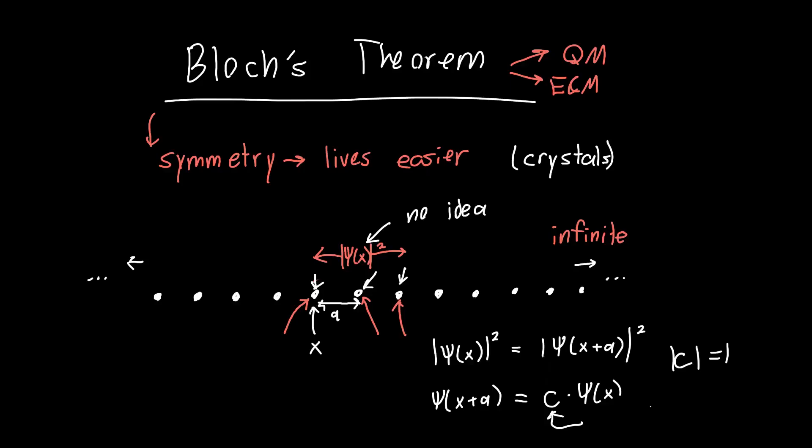Well, we know one function whose magnitude is always one, and that's the complex exponential. So E to the J K X, for example. But that still leaves us with the question of what is K, and it's also not clear that this is the only possible form of C. So we're going to need to do something else to figure this out.